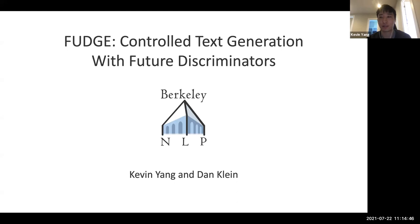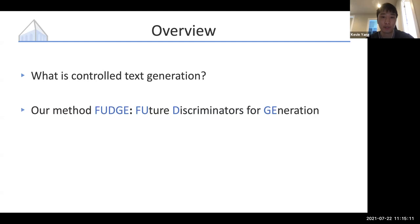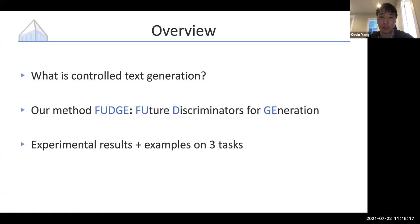I'll start with this paper: FUDGE — Controlled Text Generation with Future Discriminators. I'll start with a quick overview. First, what exactly is controlled text generation as we define it? Then I'll describe our method, FUDGE (Future Discriminators for Generation). And then I'll show the experimental results and a few example model outputs on three diverse control generation tasks that we try in this paper.